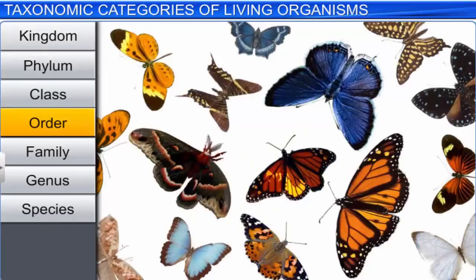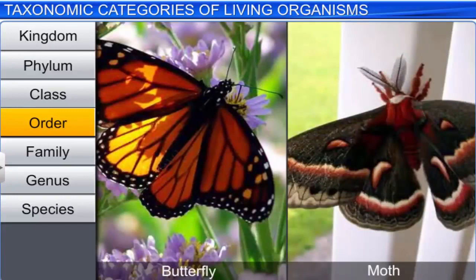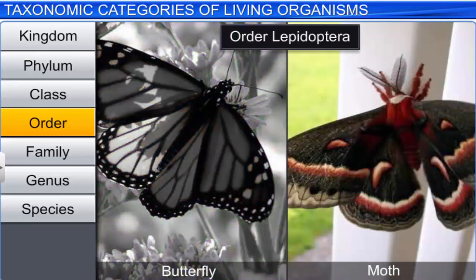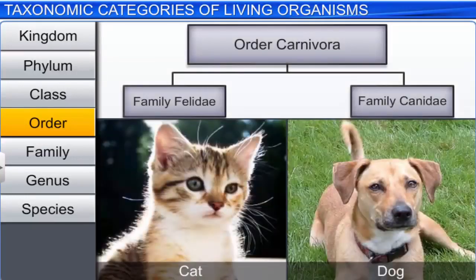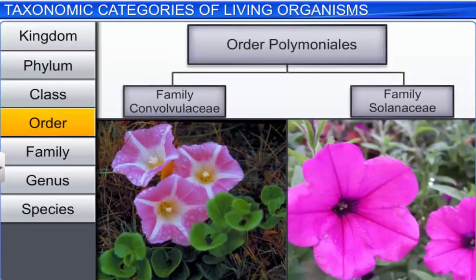Order is the next category, which is a collection of related families. However, the number of similarities is less than that seen in a family. For example, the order Lepidoptera includes butterflies and moths belonging to the families Papilionidae and Tineidae respectively. Similarly, families like Felidae and Canidae are included in the order Carnivora. While plant families like Convolvulaceae and Solanaceae are included in the order Polemoniales, on the basis of floral characters.